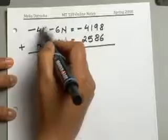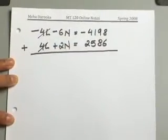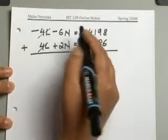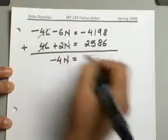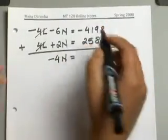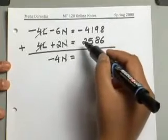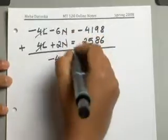Now we can go ahead and add these two equations together. And you will see negative 4L, positive 4L will cancel out. And you're left with negative 6N plus 2N, which will give you negative 4N. And that equals, you will end up with, you have a negative 4,198 and a positive 2,586.